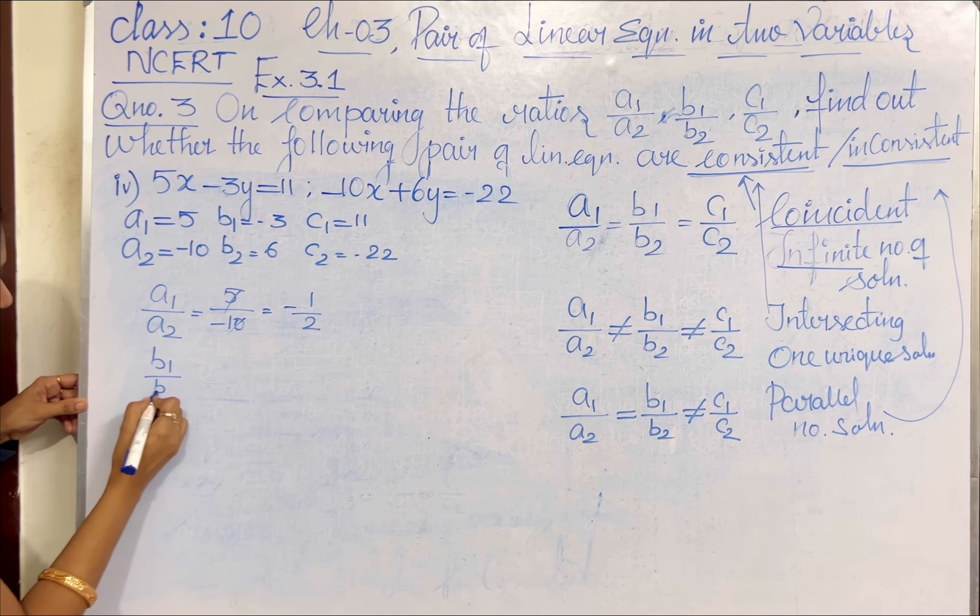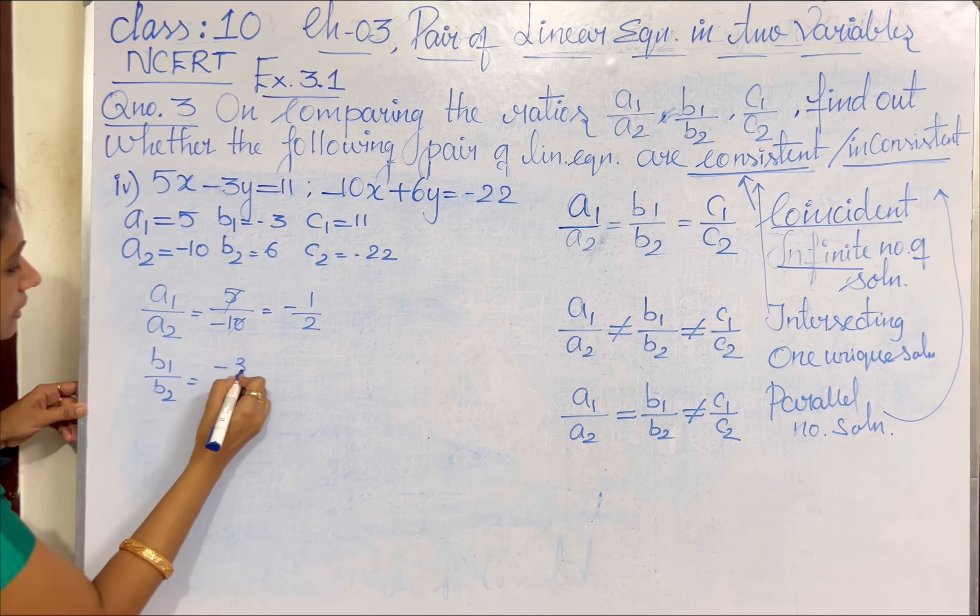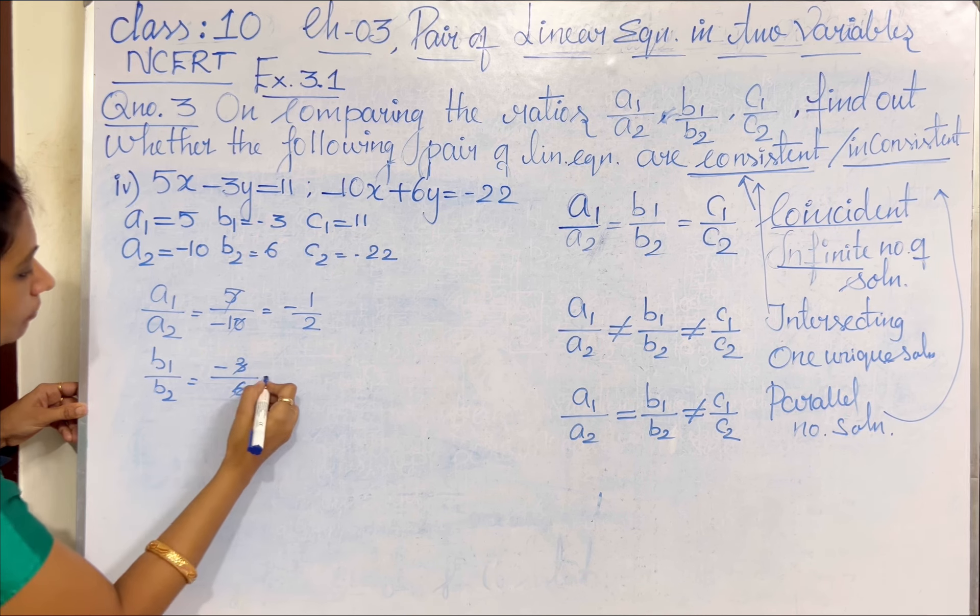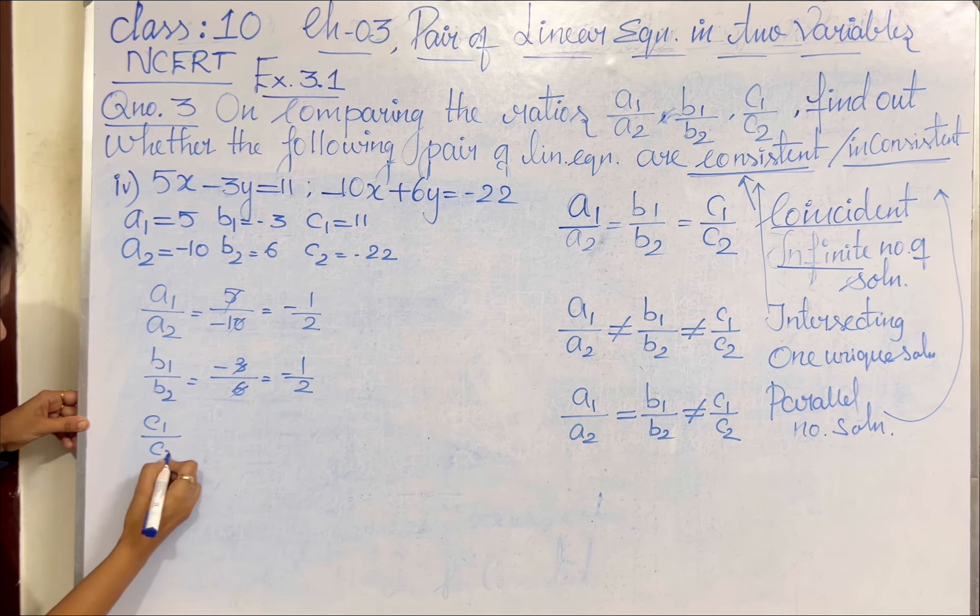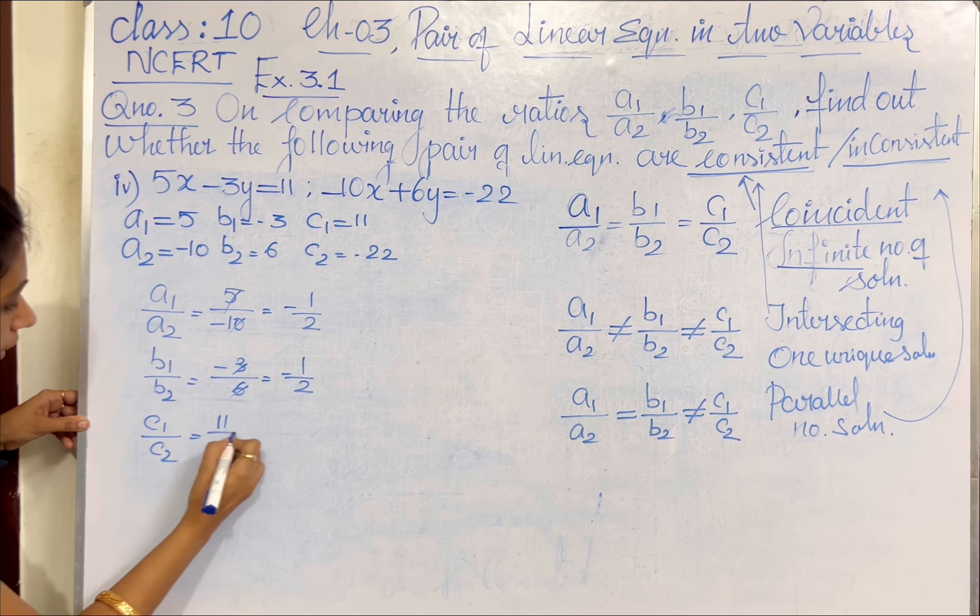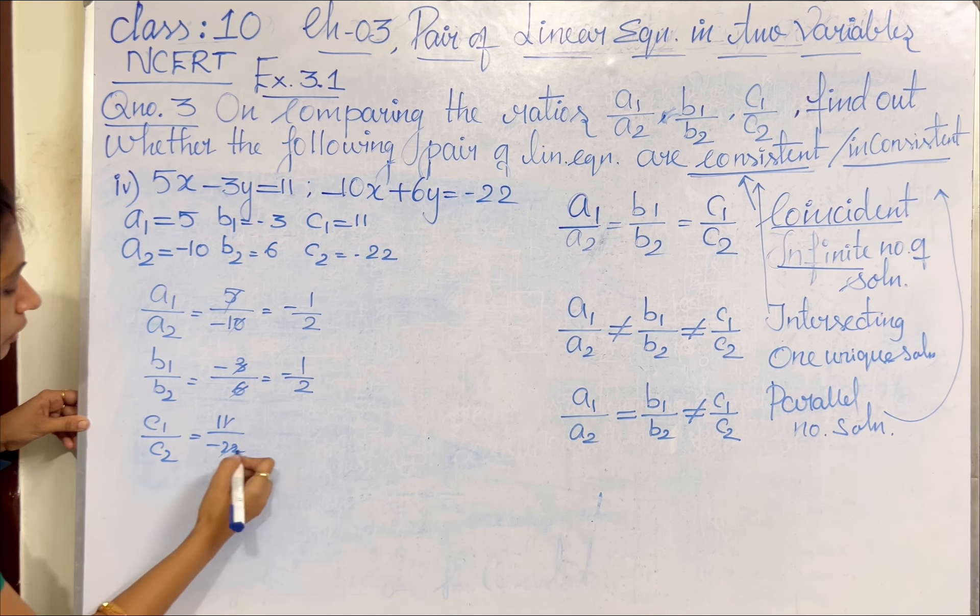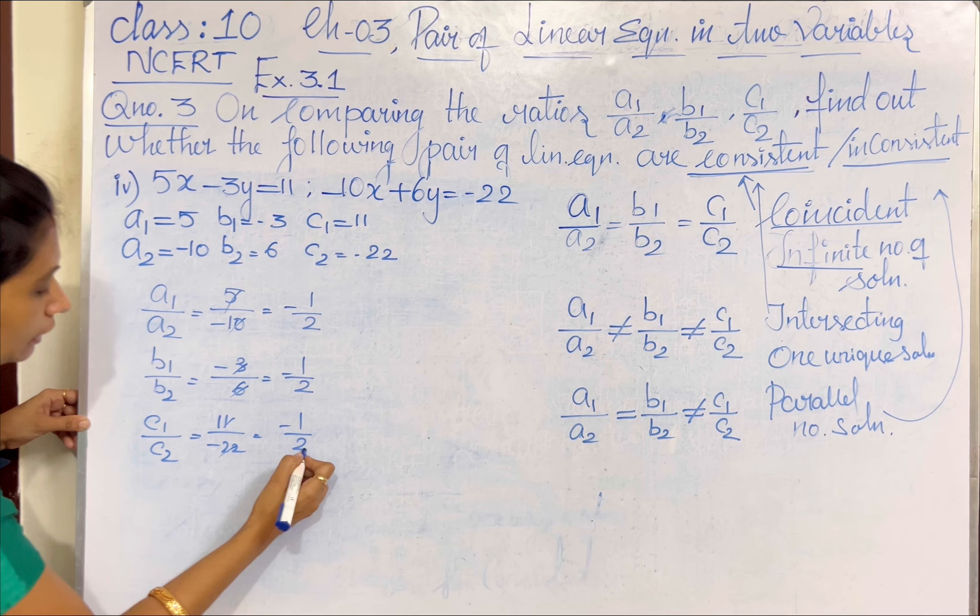Next, we find out the second ratio B1 by B2: minus 3 by minus 6. When you simplify, that is again equal to minus 1 by 2. C1 by C2 is equal to 11 divided by minus 22. That is again equal to minus 1 by 2.